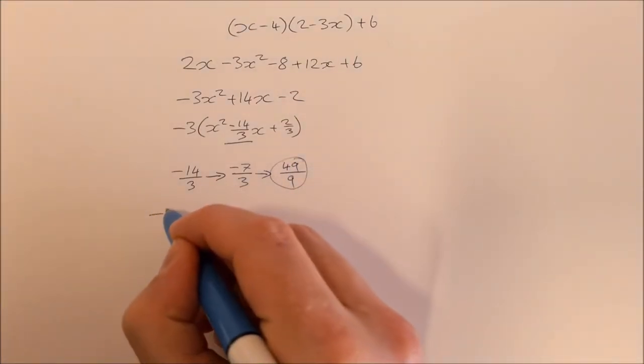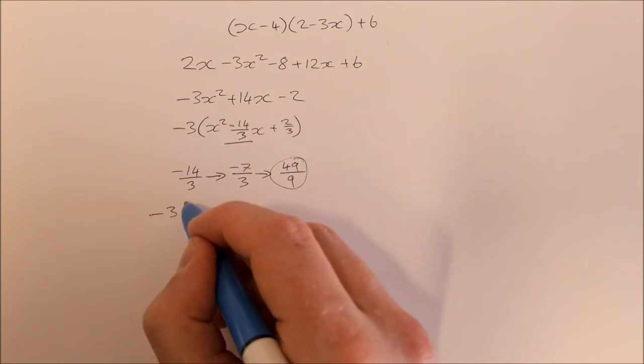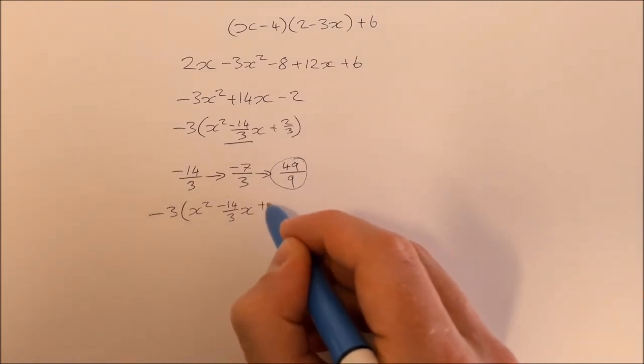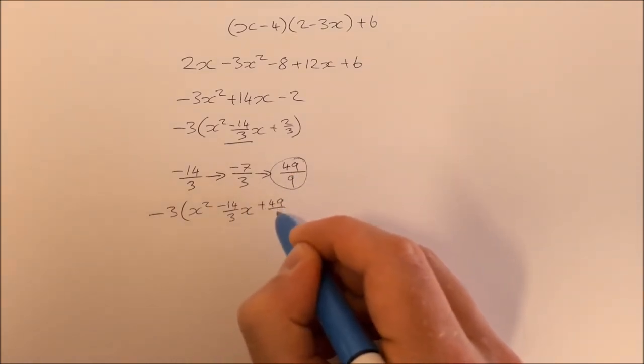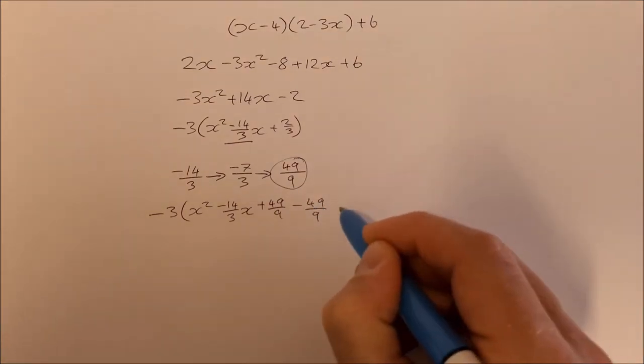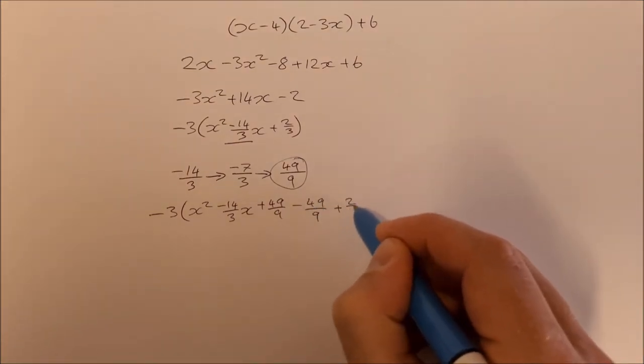So on to the next line: minus 3 times x squared minus 14 over 3 x, and plus 49 over 9, then we have minus 49 over 9, and then we have our plus 2 over 3.